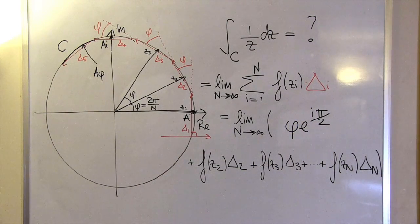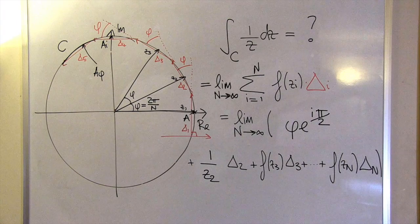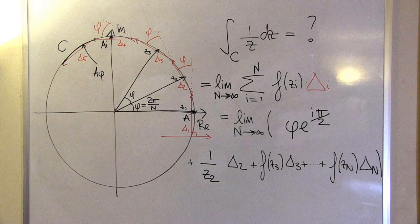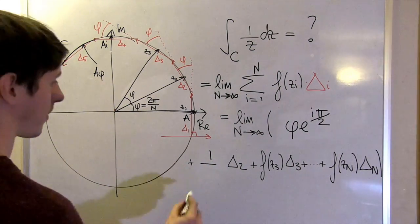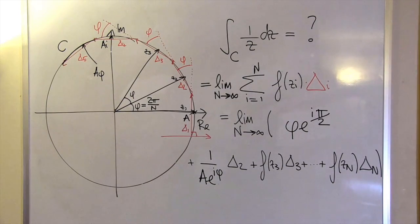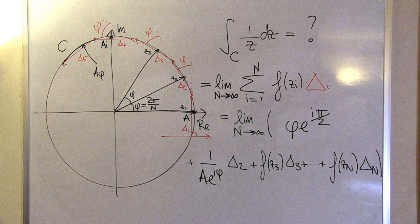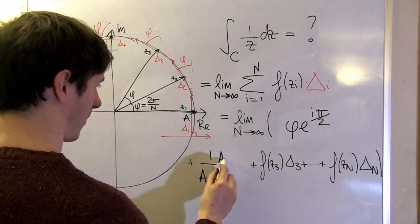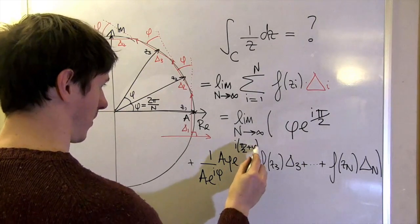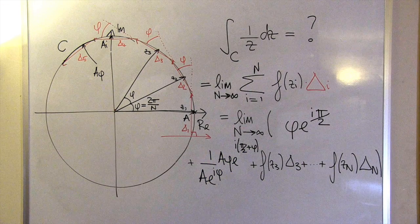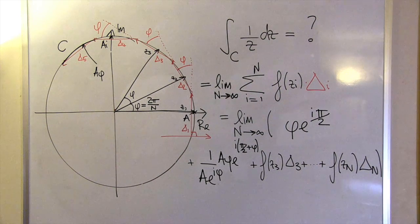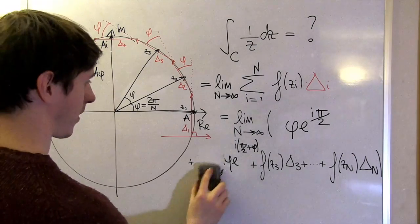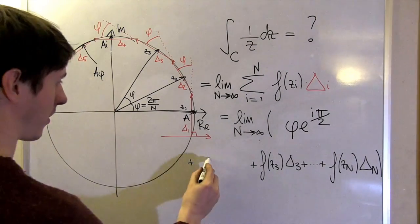Let's move on to the next term. Well, the magnitude of z2 is just a, the radius of the circle again, but its angle has increased by phi. That makes f of z2 equal to 1 divided by a times e to the i phi. Delta 2 has the same magnitude as delta 1, and its angle has also increased by phi, so delta 2 is equal to a times phi multiplied by e to the i pi over 2 plus phi. The same deal as the last time—the a's cancel, but now we get an extra cancellation for free. E to the i phi on top cancels with the e to the i phi on the bottom, so the second term is just equal to the first term.